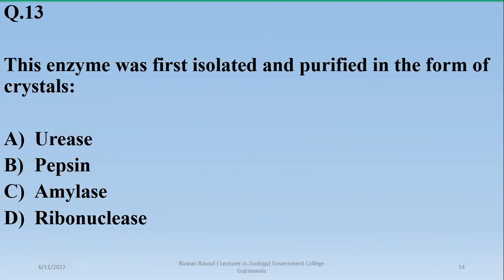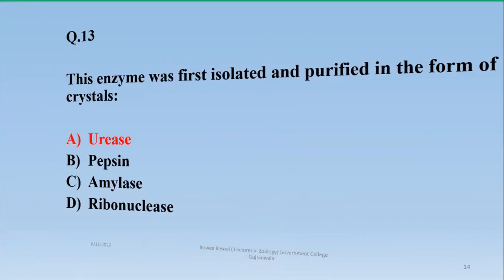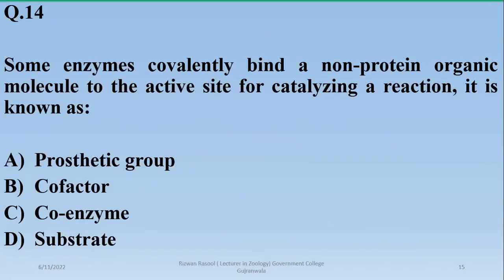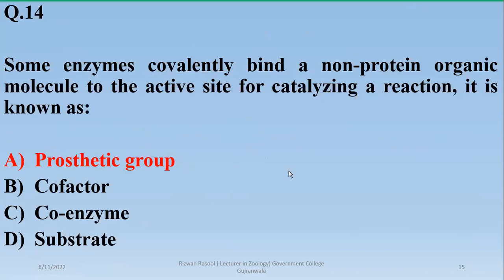Number thirteen: the enzyme that was first isolated and purified in crystalline form was urease — so alpha is the right option. Number fourteen: some enzymes covalently bind a non-protein organic molecule as a cofactor. If it is covalently bonded it is a prosthetic group; if it is loosely attached it is a coenzyme. So the right option is alpha.